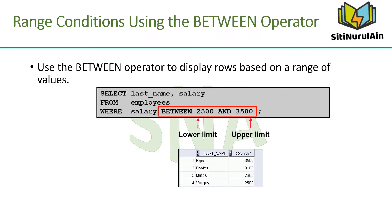You can display rows based on a range of values using the BETWEEN operator. The range that you specify contains a lower limit and an upper limit. The SELECT statement in the slide returns rows from the employee table whose salary is between 2500 and 3500.